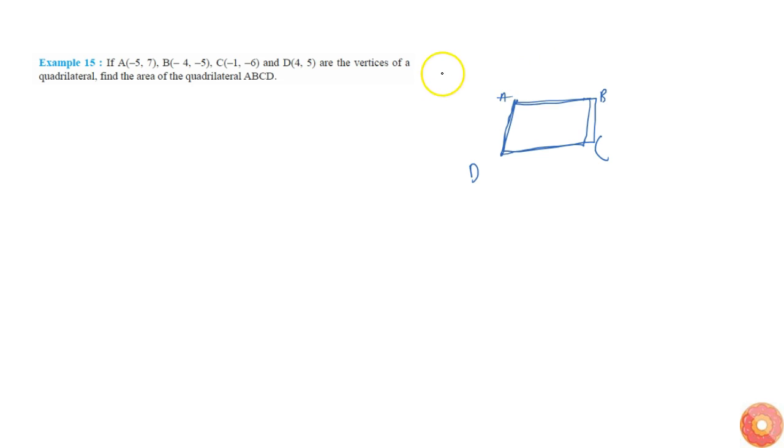So what we can do is we can try to find area of triangle ABC. Because we know the area of triangle ABC, then area of ADC, then add it. So total area is equal to...